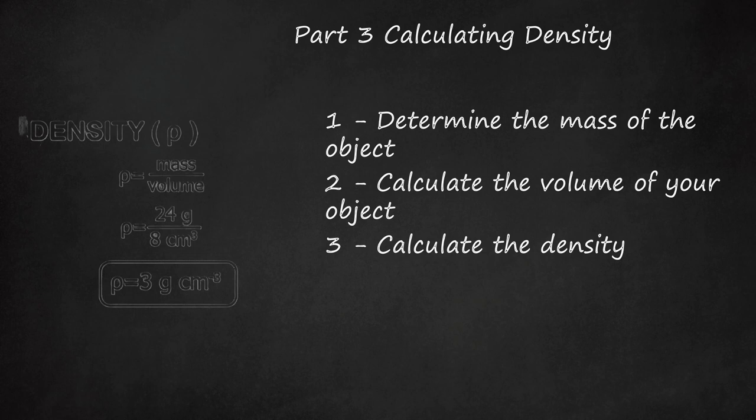For example, calculate the density ρ of a substance with a volume of 8 cubic centimeters and a mass of 24 g. ρ = m/V = 24 g / 8 cm³ = 3 g/cm³.